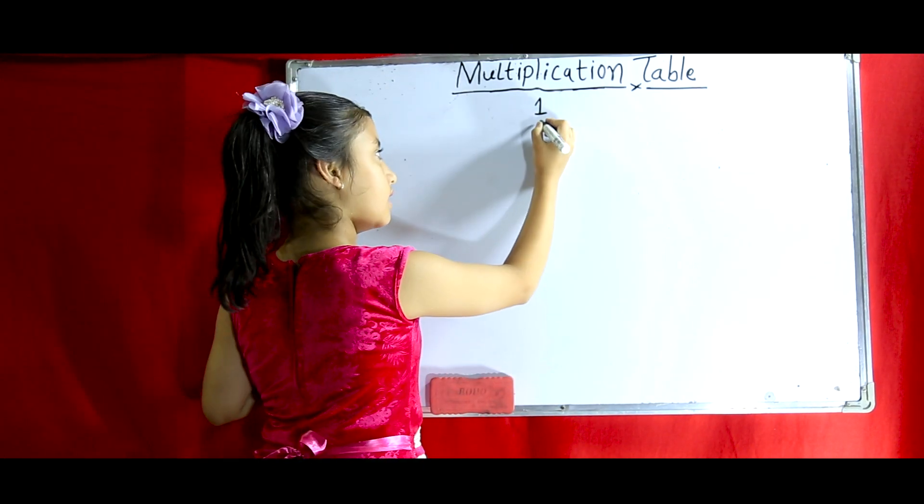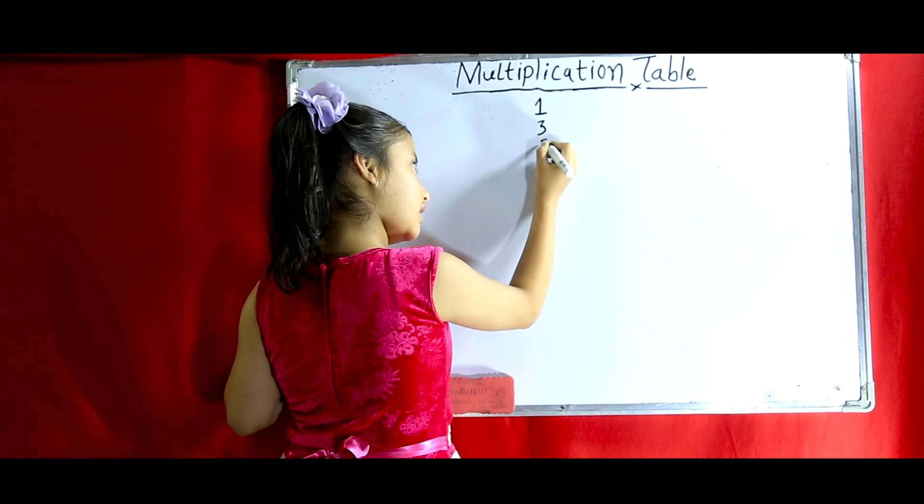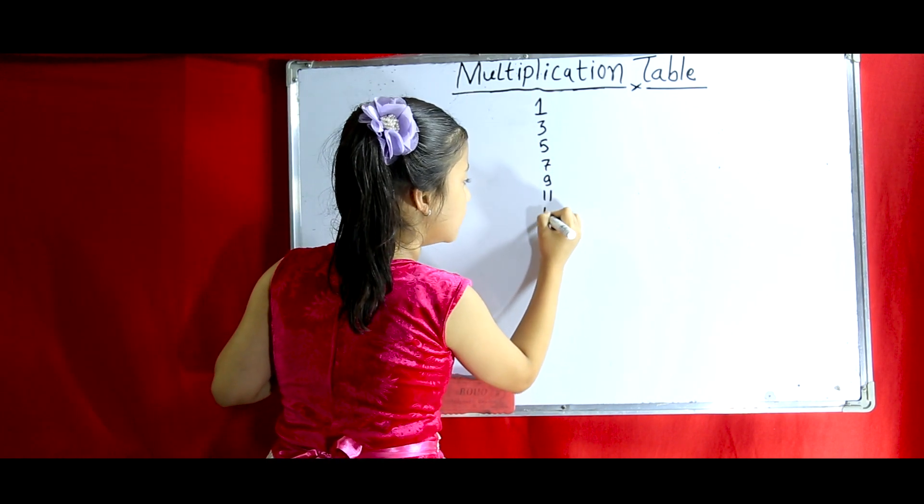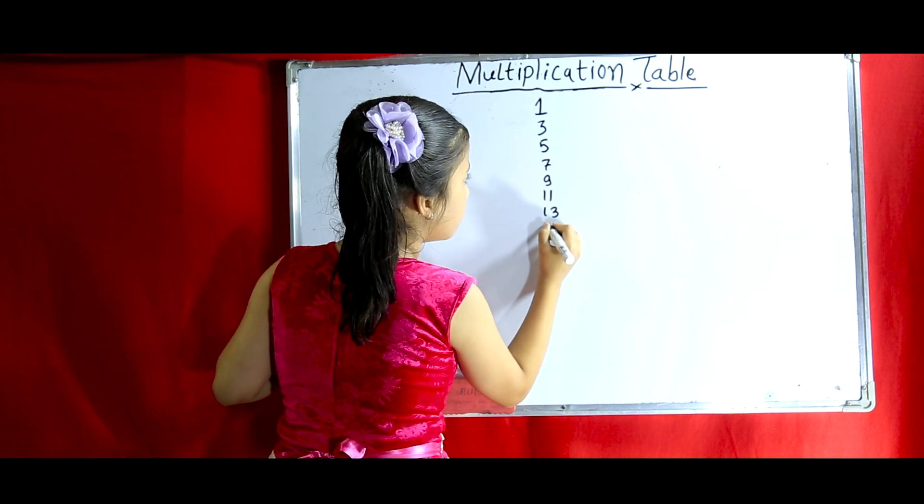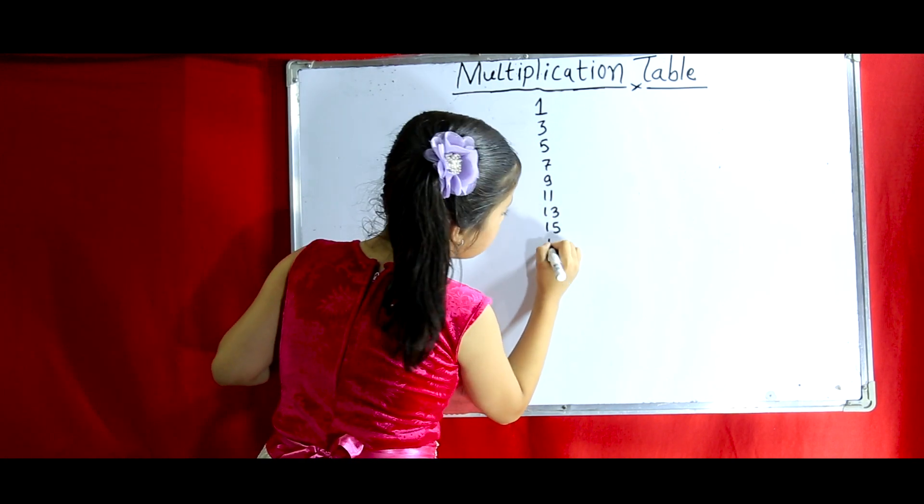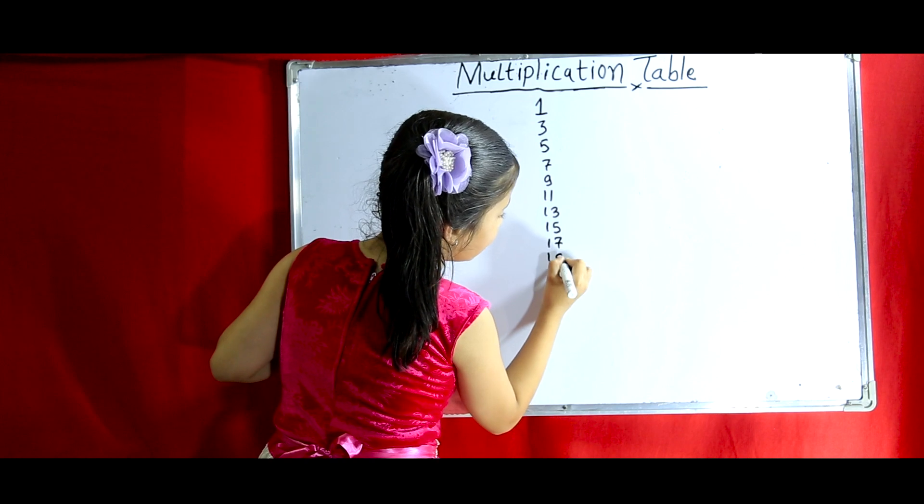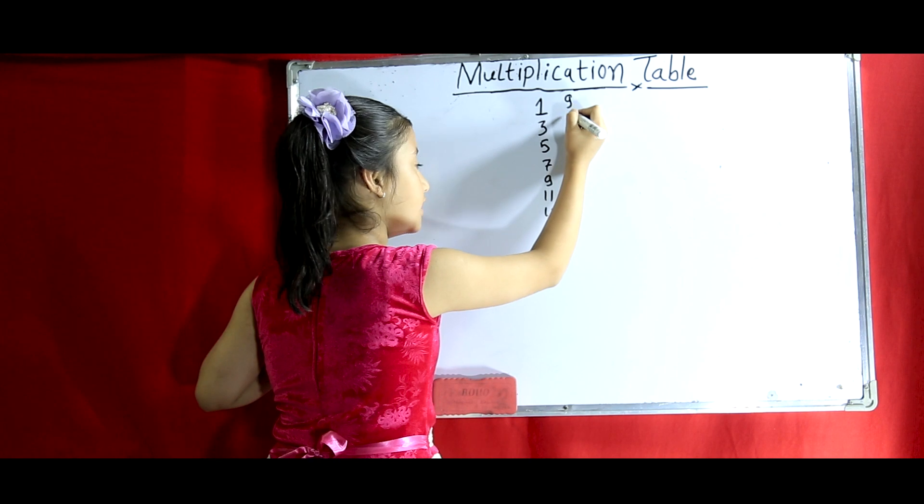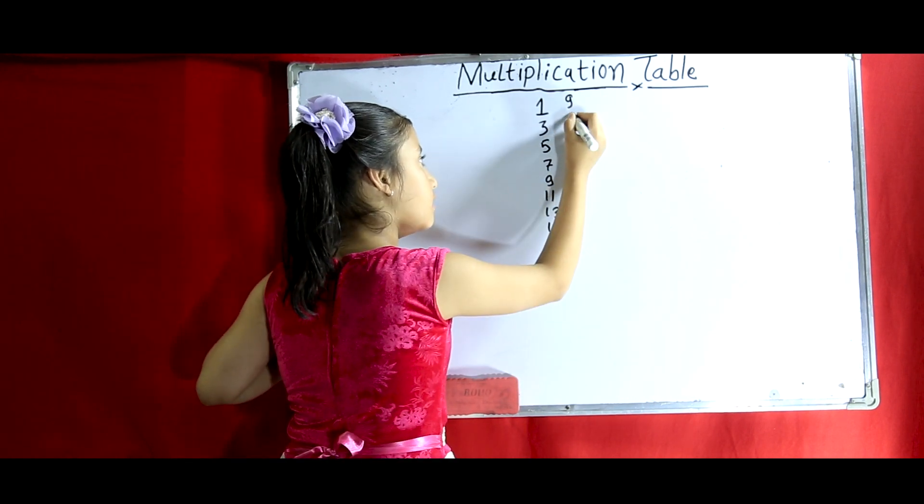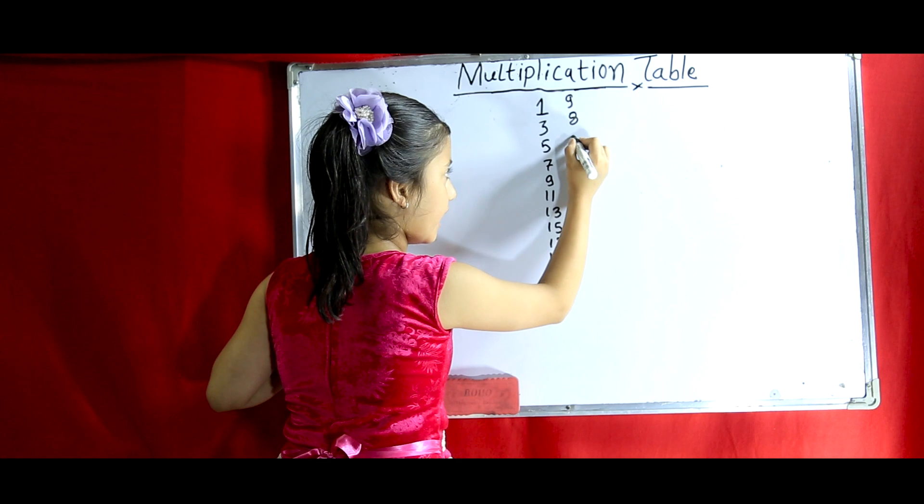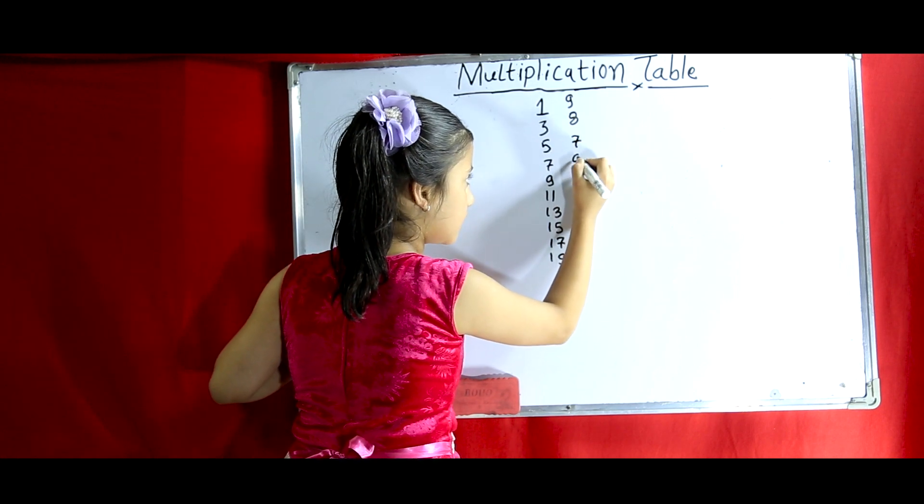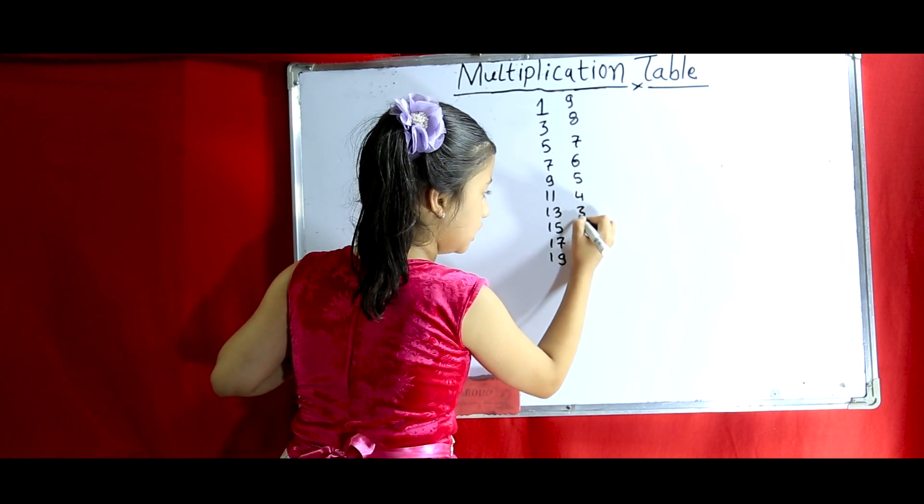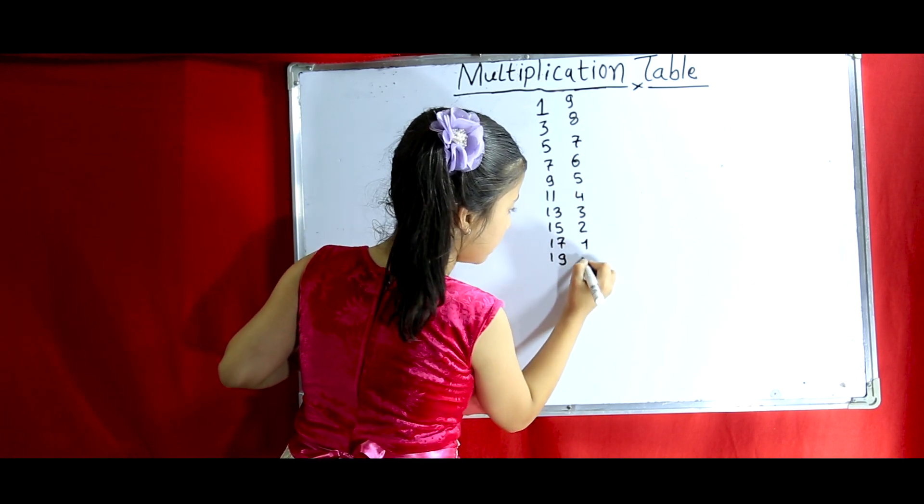Write the odd numbers like this: 1, 3, 5, 7, 9, 11, 13, 15, 17, 19. So write it. Now from 9, write it down 1, as of 9, 8, 7, 6, 5, 4, 3, 2, 1 and 0.